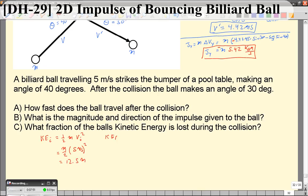The kinetic energy final is going to be one-half m vf squared, which is going to be one-half times, or m over 2 times the 4.42 meters per second squared. And when we do that, we get 9.77 m, which, as you would expect, is lower. Energy was lost.